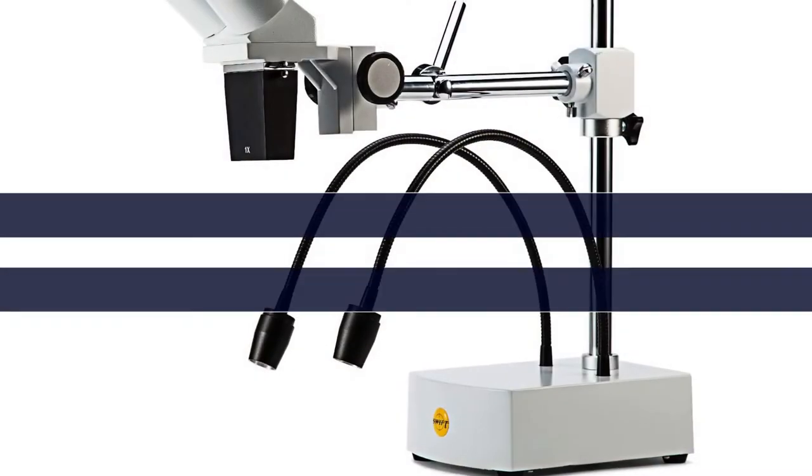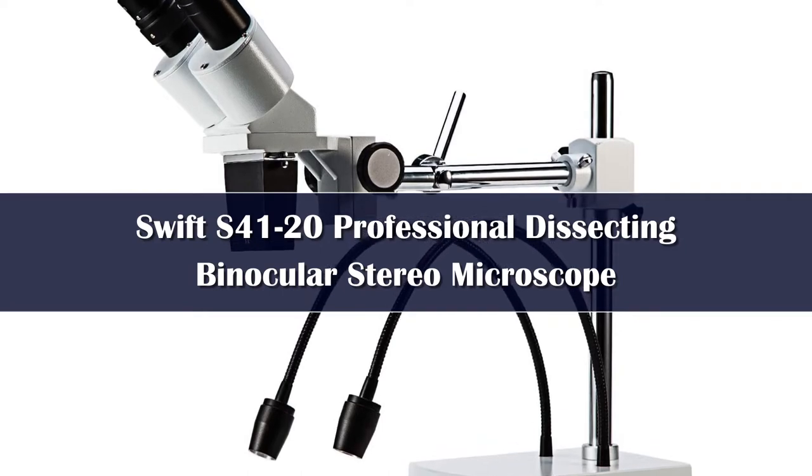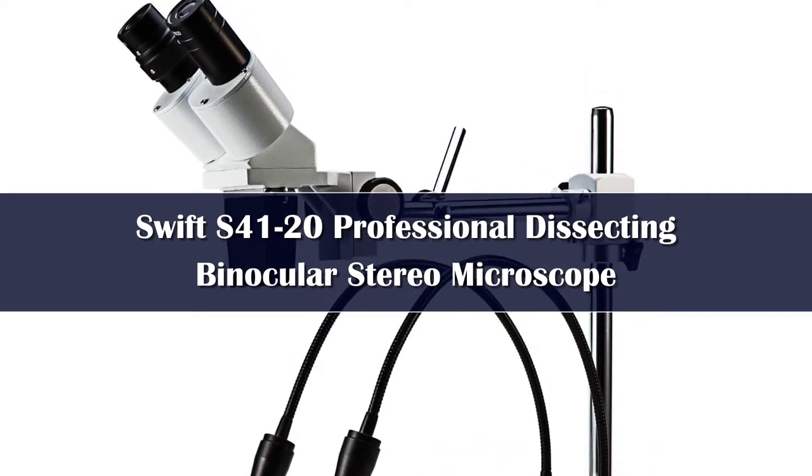Number 5: Dual Gooseneck Light. The flexible gooseneck LED light shines down onto objects for the observation of surface details and fine structures.